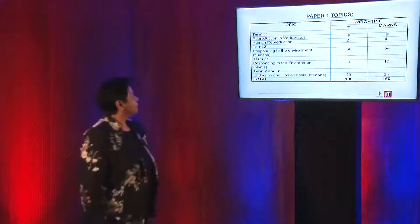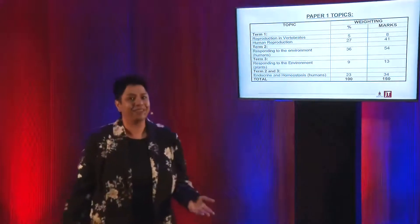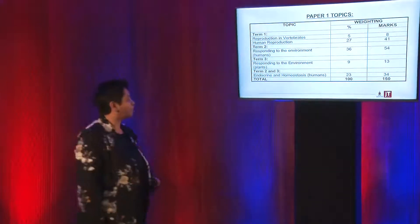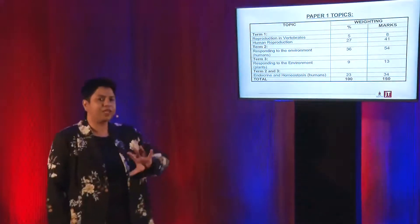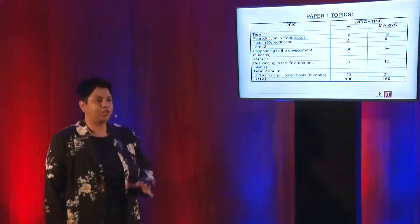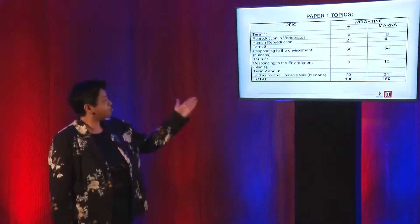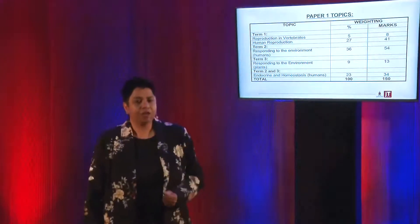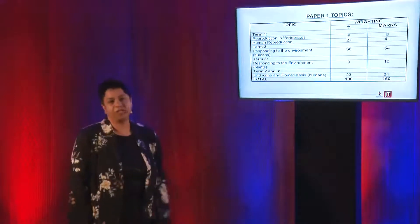Human reproduction is 41 marks, and today I'll be going over tips, clues, ideas, and notes to help you get those 41 marks. Responding to the environment — 54 marks — covers the nervous system, the eye, and the ear. Responding to environment for plants is 13 marks. The endocrine system and homeostasis in humans is linked — don't learn those sections in isolation — worth 34 marks. Total is 150 marks. Stick with me for this hour and I will help you get 120 out of 150.